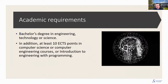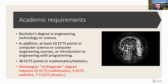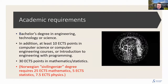You need to have at least 30 ECTS in mathematics and statistics. If you want to have the civil engineer Norwegian degree, we require 25 ECTS in mathematics, five ECTS in statistics, and seven and a half ECTS in physics.